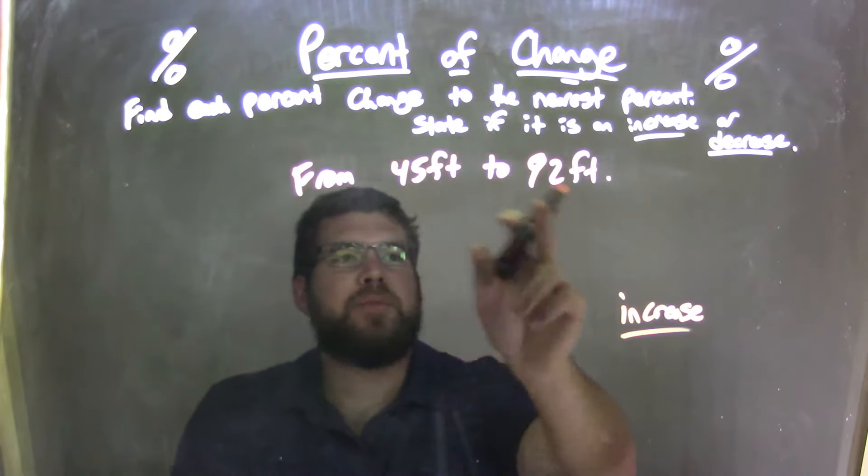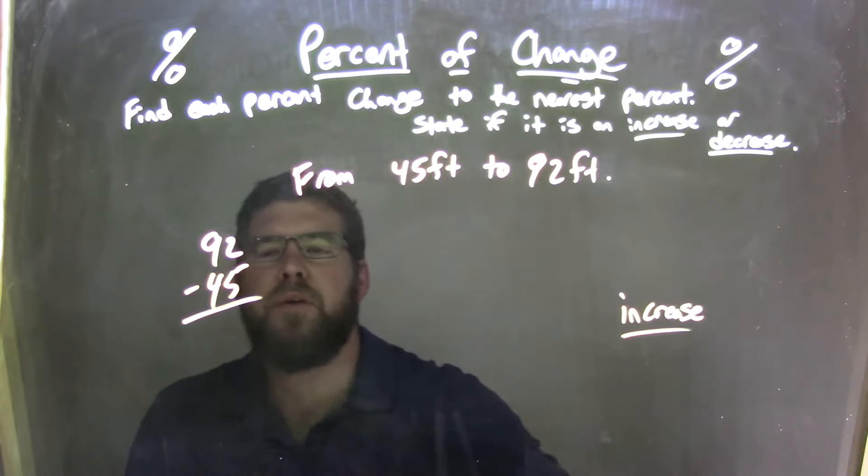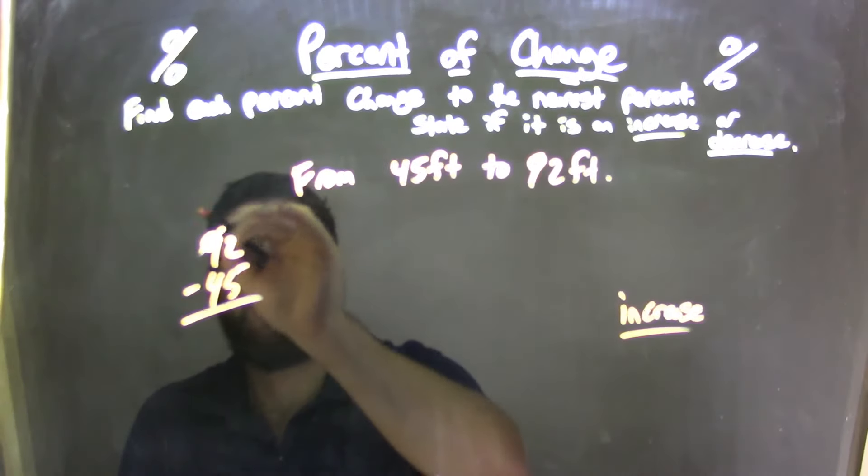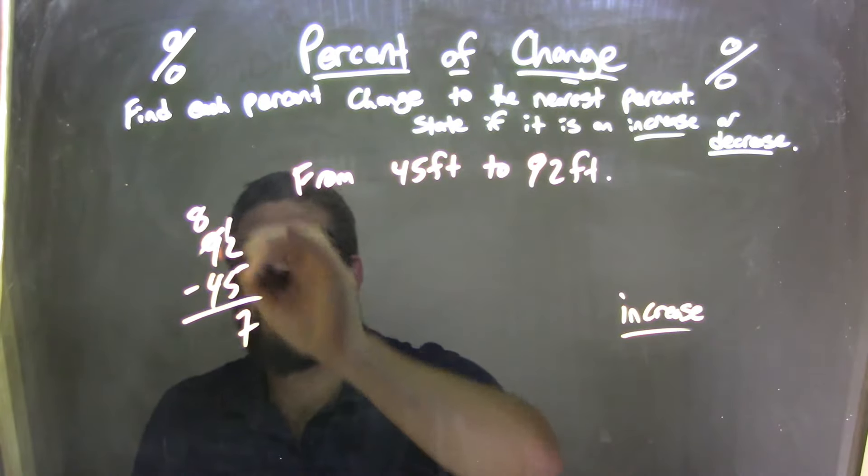So now I need to find the difference between these two. 92 minus 45. What does that come out to be? Well, 9, 8, carry the 1 there. 12 minus 5 is 7. 8 minus 4 is 4.